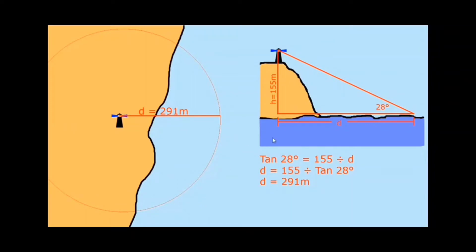The formula is: height divided by distance equals the tangent of the angle. In other words, tan(28) equals 155 divided by D. Rearranging, the distance from the lighthouse is 155 — the height in metres — divided by the tangent of 28 degrees. This gives a distance of 291 metres. So on your chart you can draw a distance of 291 metres.